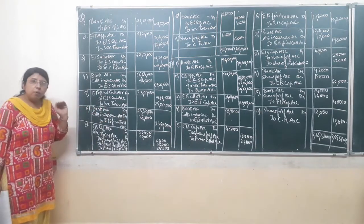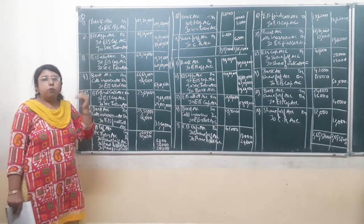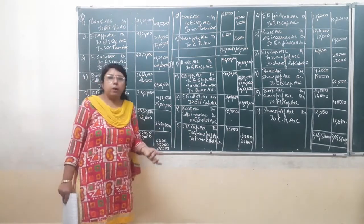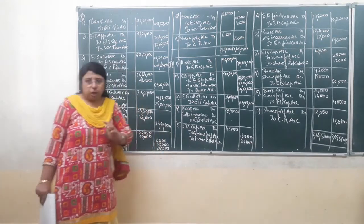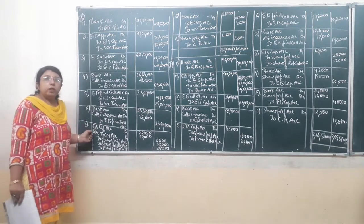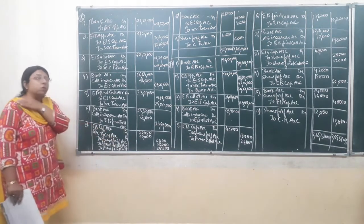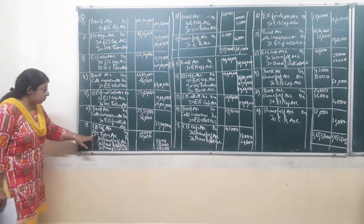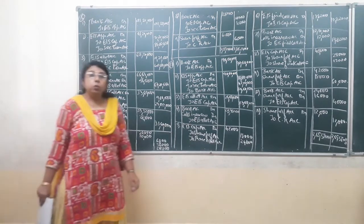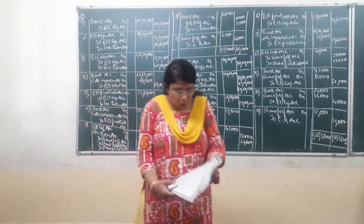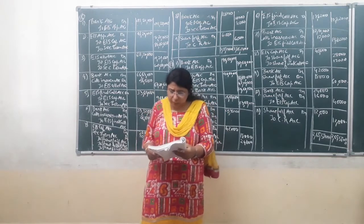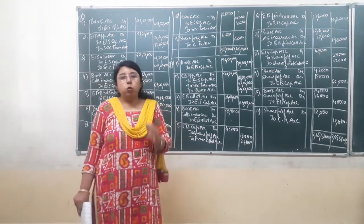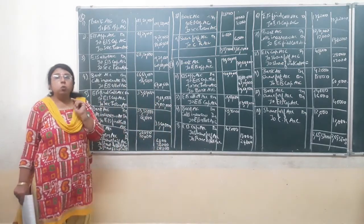Now we have completed all three steps of due and received amounts for application, allotment, and final call. The next point is the forfeiture. After applying all the necessary procedures, the company forfeited the shares of Jahangir. Equity share capital account is debited for 2,000 shares multiplied by Rs. 10 per share, coming to Rs. 20,000. Securities premium account is debited for Rs. 35 per share, which is the premium paid at the time of application: 2,000 multiplied by Rs. 35 comes to Rs. 70,000.